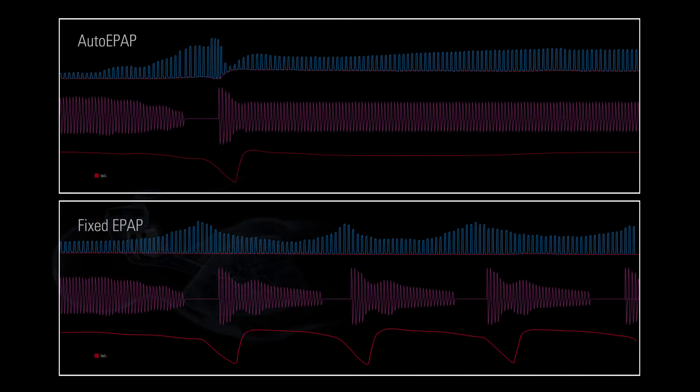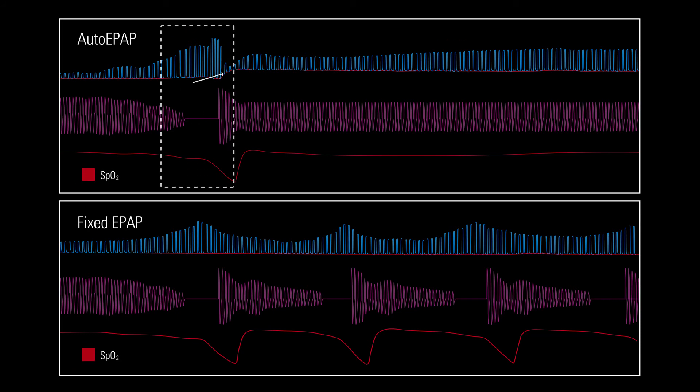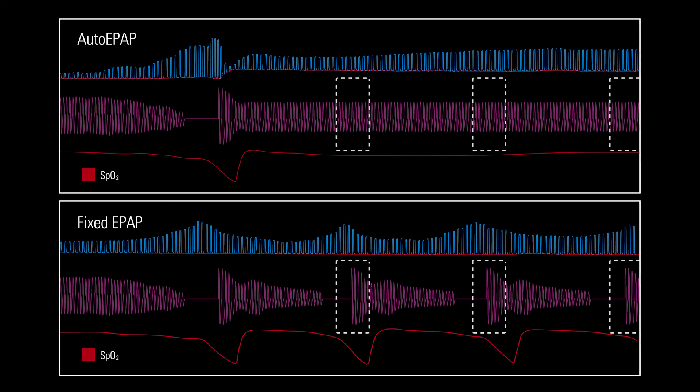As detection using this algorithm is continuous, Auto-EPAP can respond to upper airway events whenever they occur. In this way, Auto-EPAP helps ensure that a patient's oxygen saturation levels are stable, the incidence of both obstructive apneas and arousals are reduced, and patient comfort is maintained.